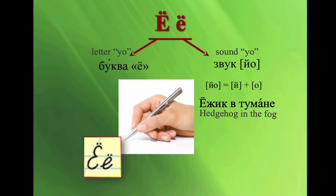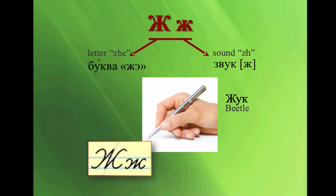Ё. Ё. Composed of two sounds. Ё. О. Ё. Ёжик в тумане. And the letter itself looks like a beetle.